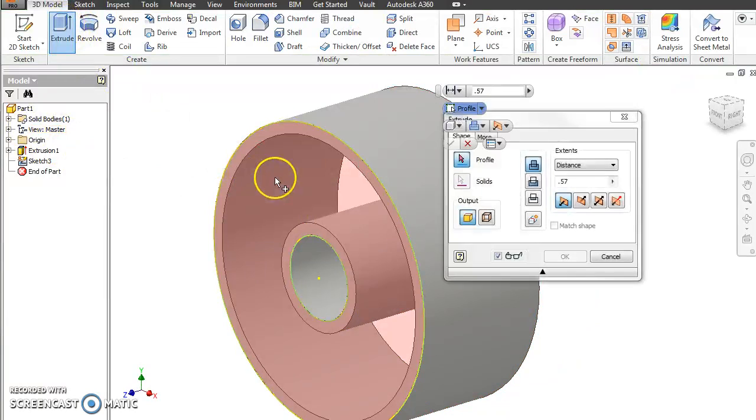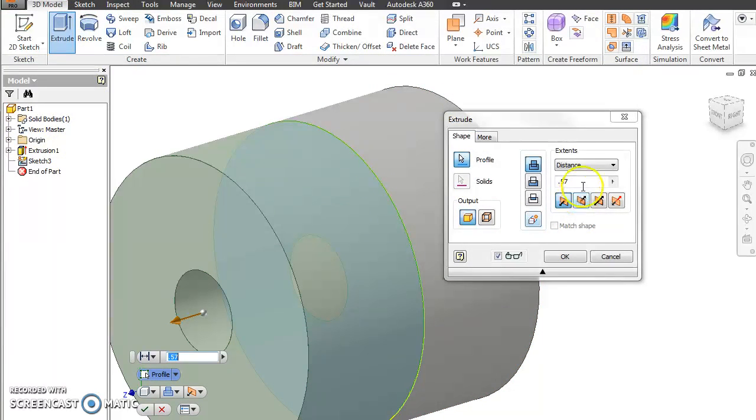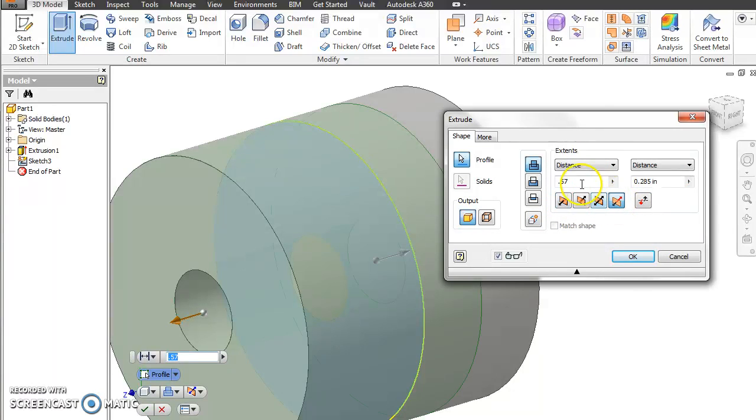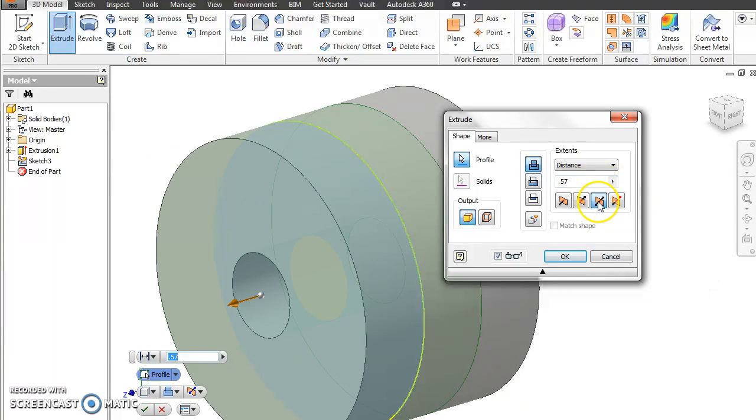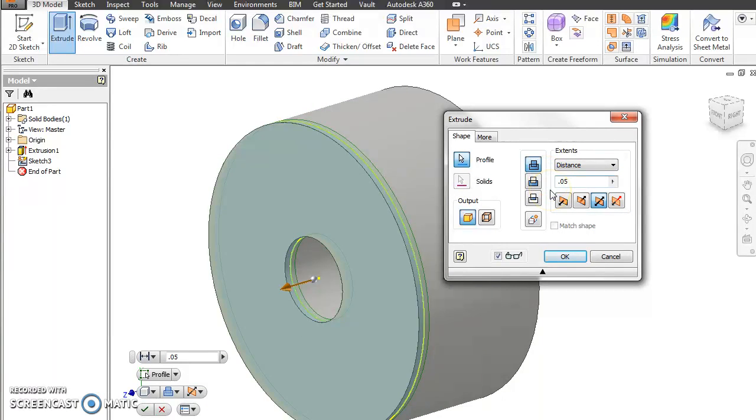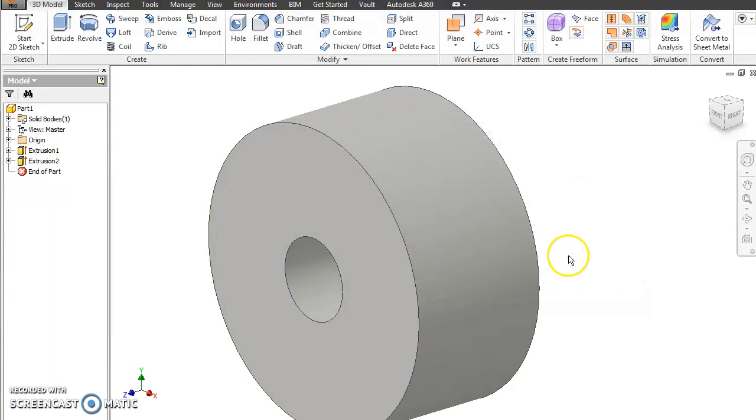And then now we can extrude it. Select what we want. Now this time we want to go here and select mid-plane. If you look, you have direction one, direction two, mid-plane, and then asymmetric, which basically lets you go so far one direction and so far the other direction. But we're going to go mid-plane, so it's balanced. 1.05, and so it'll put 25,000 on either side. Hit OK.